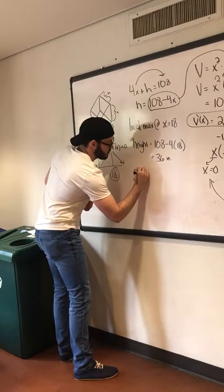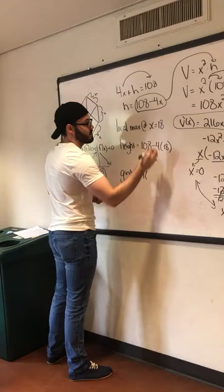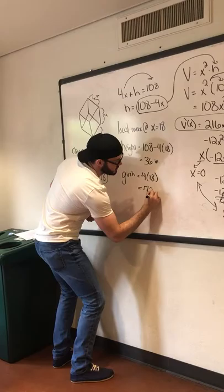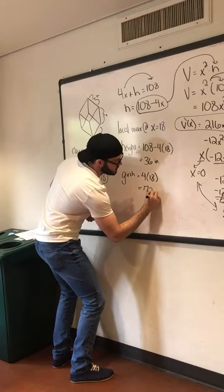And for the girth, which is the sum of the four sides of the base, you get 4X, so 4 times 18, equals 72 inches. So the question asks for the height and girth, the largest possible dimensions, and these are the two numbers. Thank you for your attention.